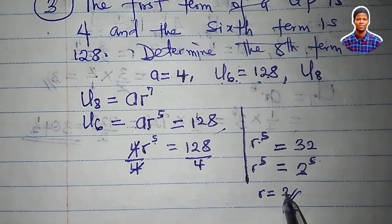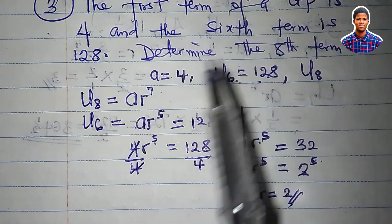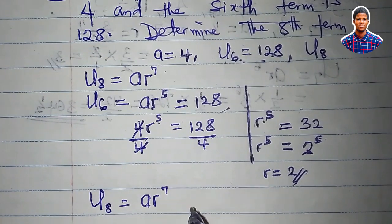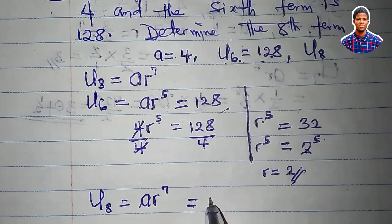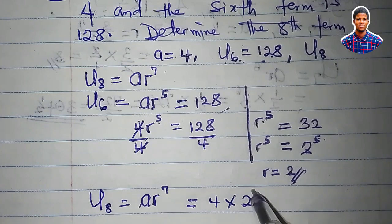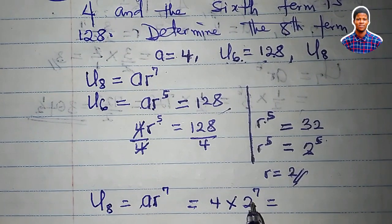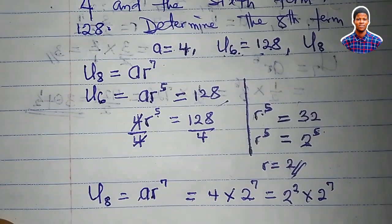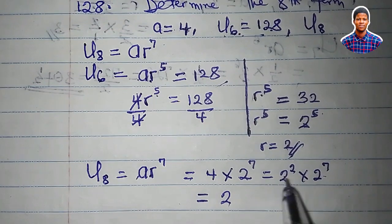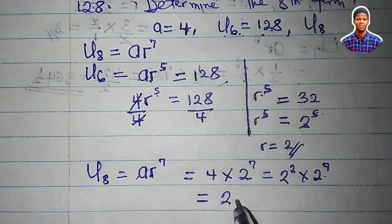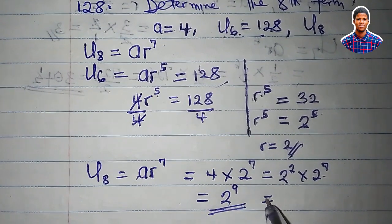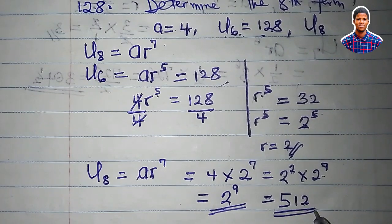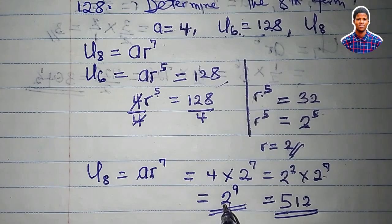Now that we know r = 2, we can calculate the 8th term. u_8 = 4 × 2^7. Since 4 = 2^2, by the law of indices this is 2^(2+7) = 2^9. The value of 2^9 is 512. So the 8th term is 512, or equivalently 2^9.